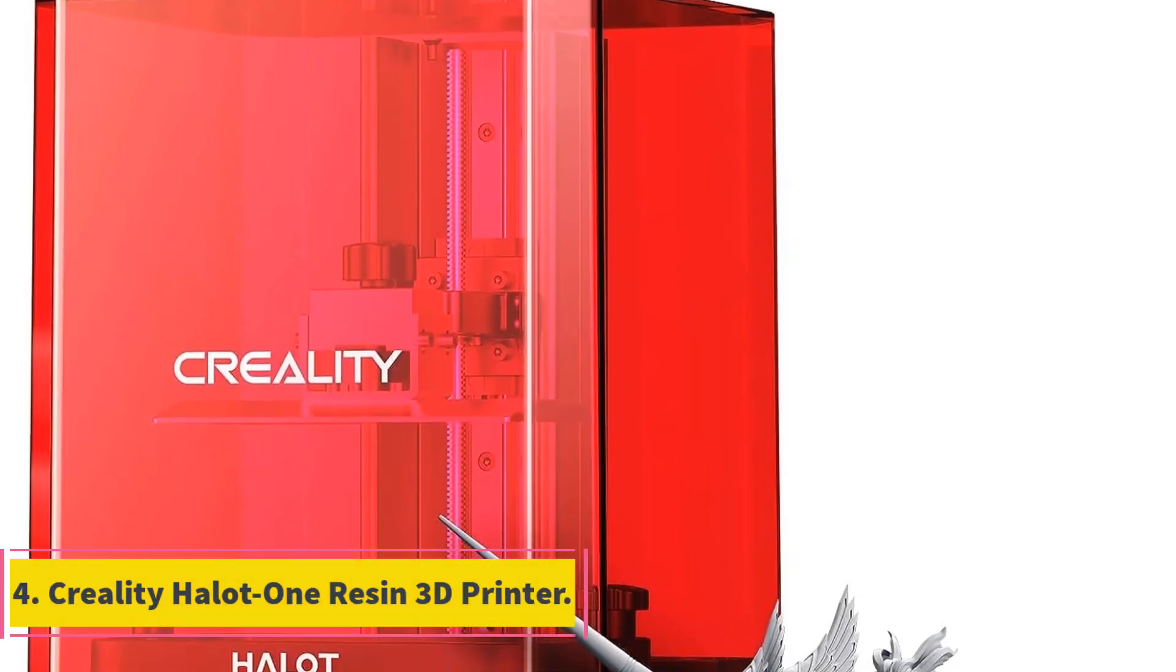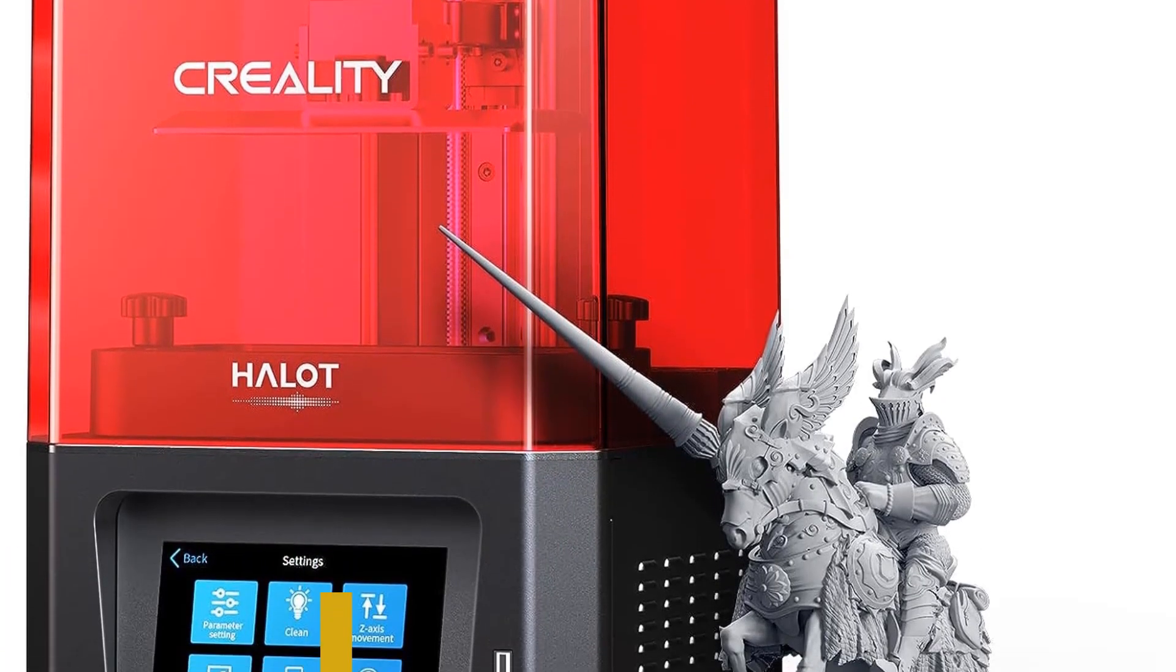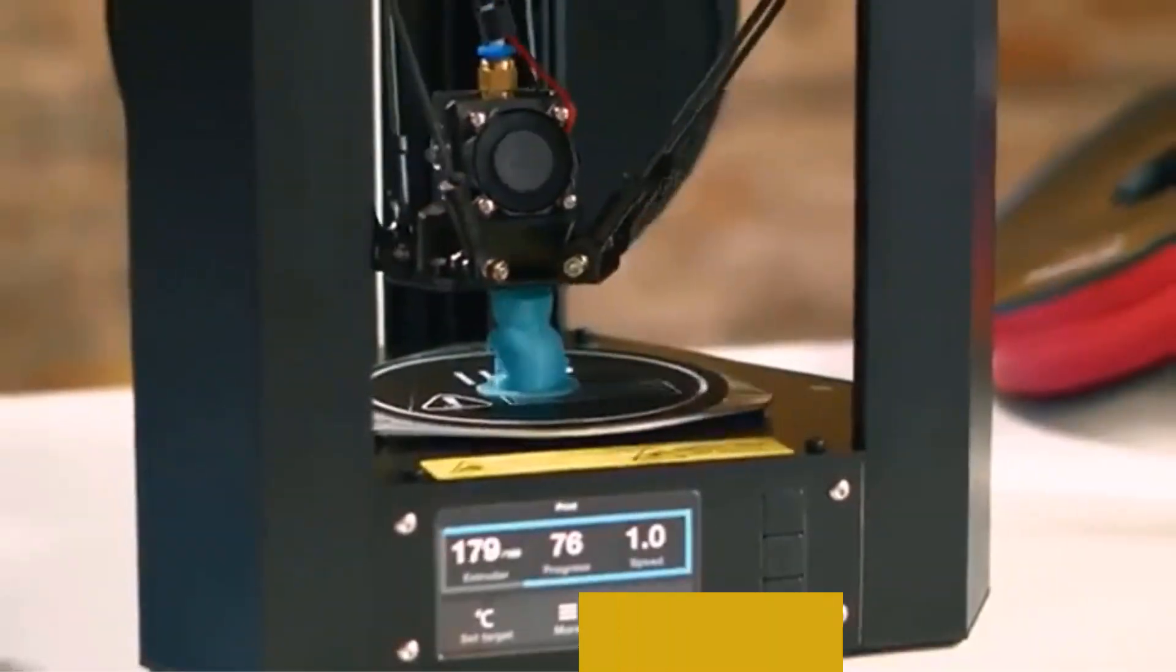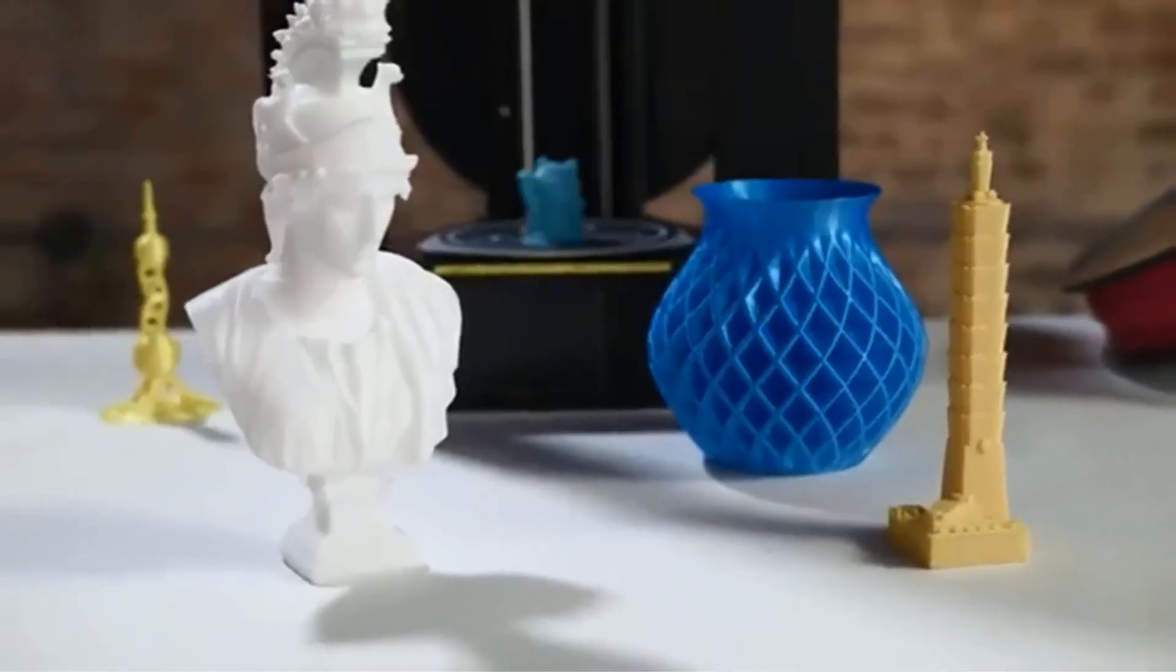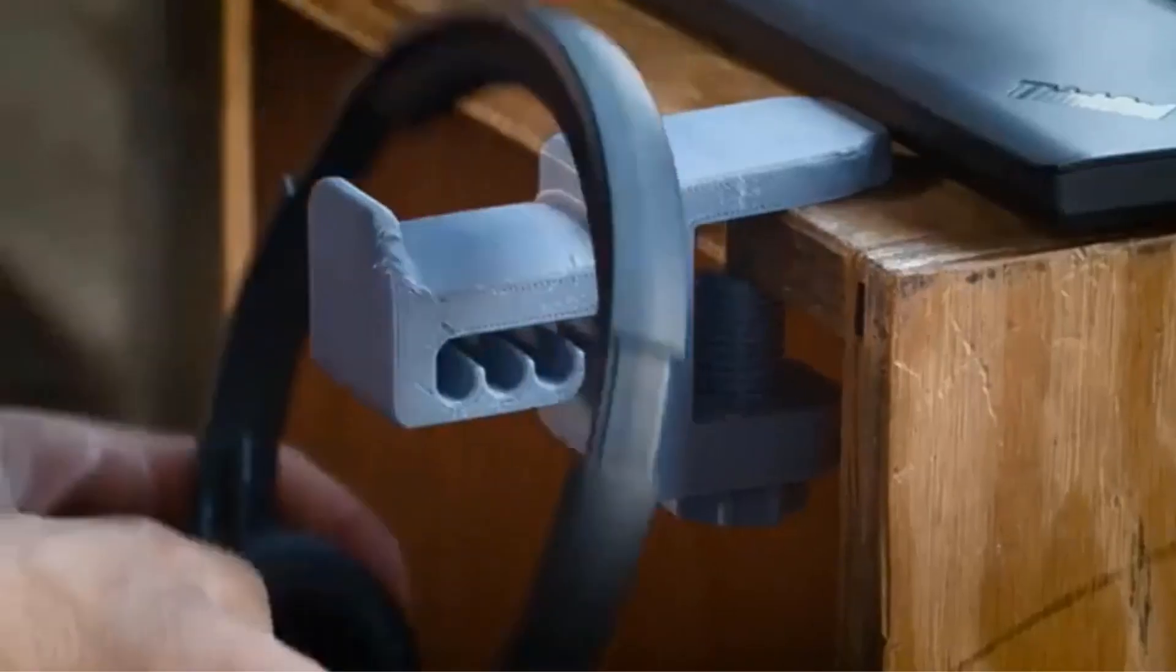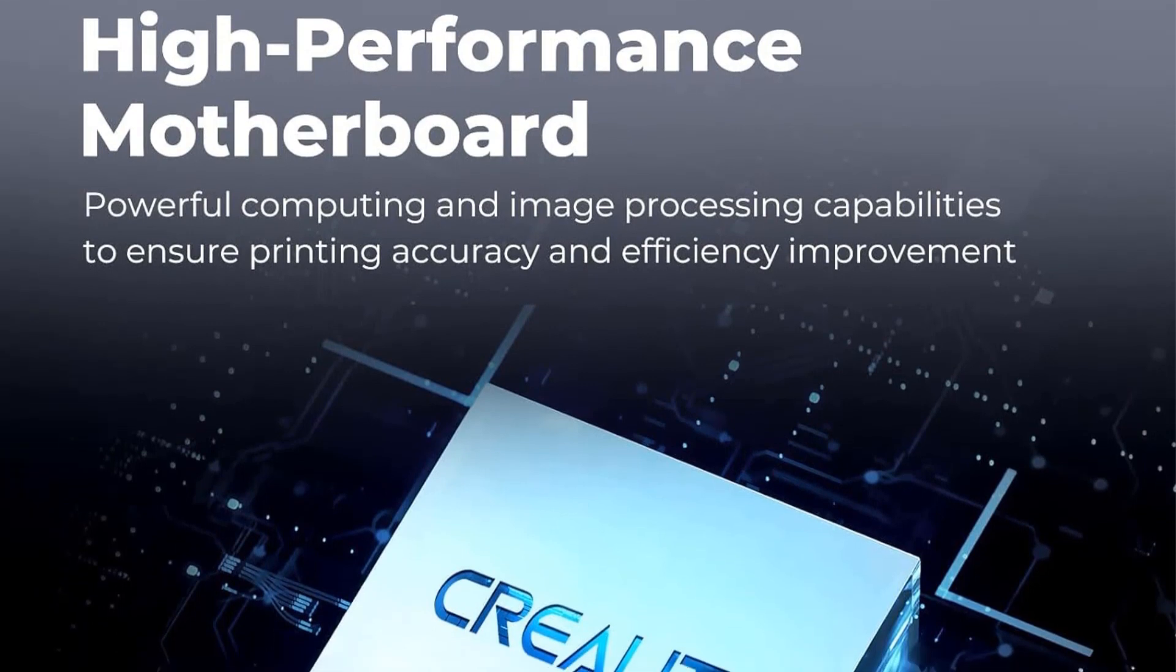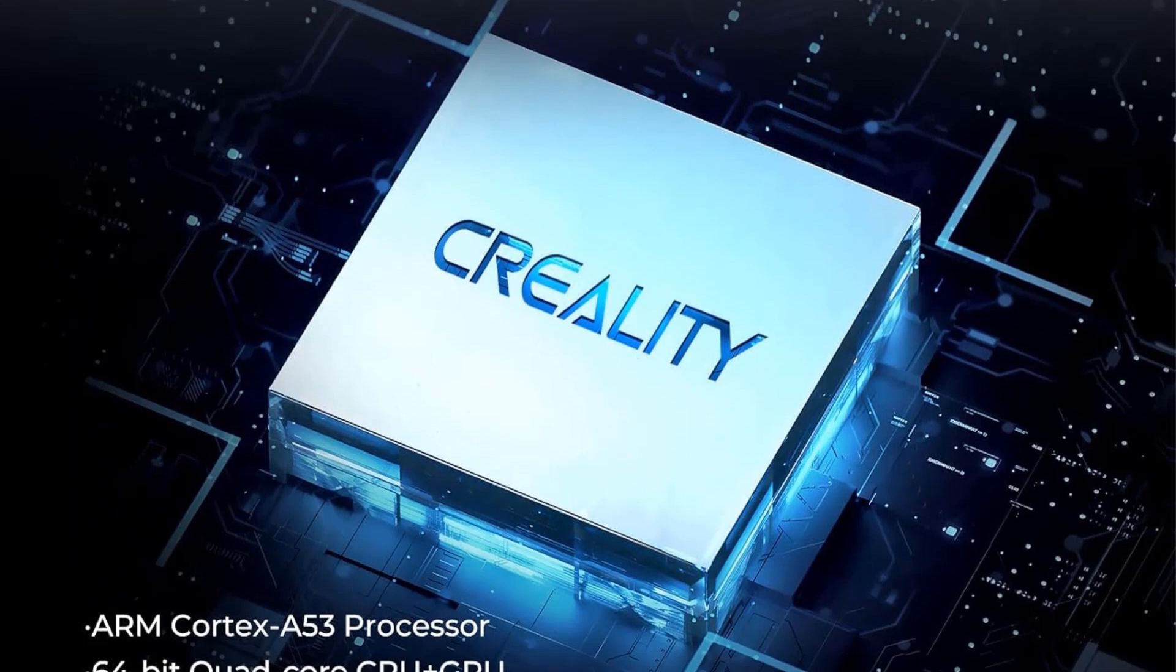Number 4. Creality Halot One Resin 3D Printer. The Creality Halot One Resin 3D Printer is a powerful and efficient printer that offers high-precision and fast printing capabilities. It features a high-precision integral light source that uses reflection and refraction technology. Compared to directional matrix light sources, this integrated light source provides a 20% increase in precision and improves uniformity to 80%. This enhances the gloss and fineness of the printed models, while also preventing issues such as uneven curing, overexposure, and printing defects.